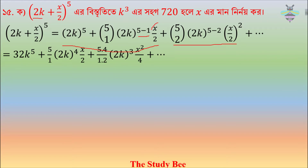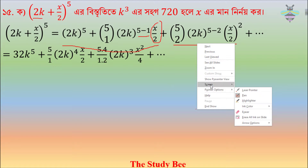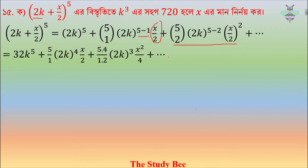x divided by 2, and x divided by 2 is much. So this is 5 of 2, 5 of 2: 5, 4, 5 into 4, then 2 factorial, 2 factorial, 1 into 2.